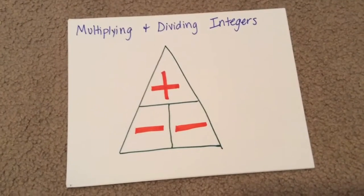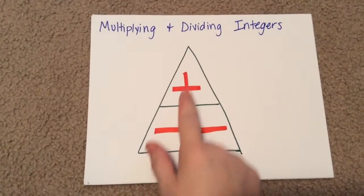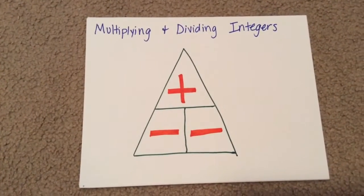But what we do now with the positives and negatives, we use our triangle here. We have one positive and two negatives, and we cover up the two that we're using.